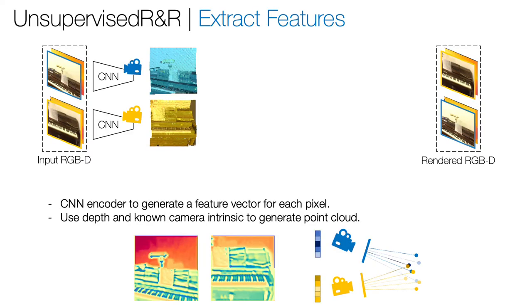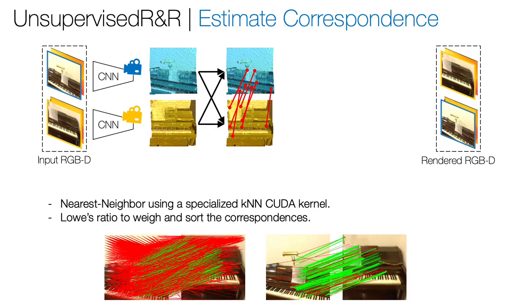Our approach is quite simple. Given two RGBD frames, we use a randomly initialized CNN to encode the images. We then use the known camera intrinsics and depth to generate two point clouds, where each point is represented by a 3D coordinate and a feature vector. We then find the nearest neighbors in feature space.